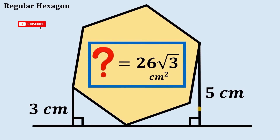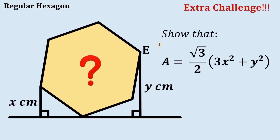Before we end this video, here's an extra challenge: given a regular hexagon where this length is x centimeters and this length is y centimeters, show that the area of this regular hexagon can be generalized as square root of 3 over 2, multiplied by the quantity 3x² plus y². Leave your answer in the comment section below.